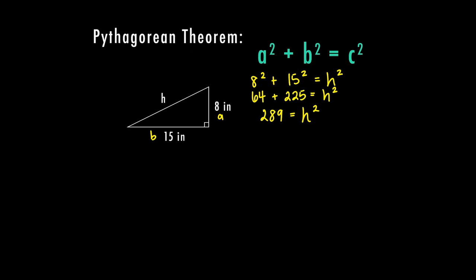So now I need to find out what number times itself equals 289. So I'm going to undo my exponent. And in order to undo my exponent, I need to square root both sides. So this side on the left, we're going to find the square root of 289, which is 17. And the square root of H squared is H. That square root and the squared cancel each other out. So in this case, my hypotenuse equals 17 inches.